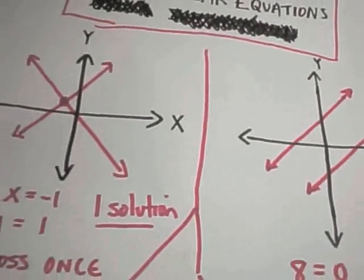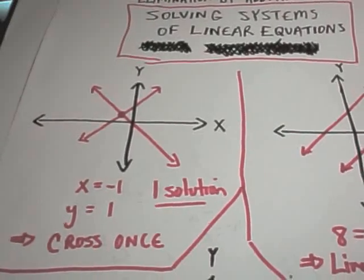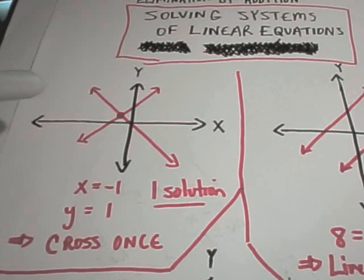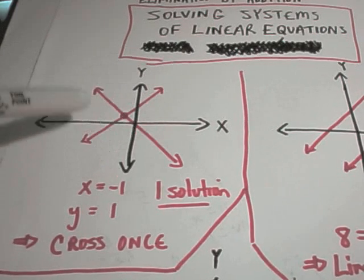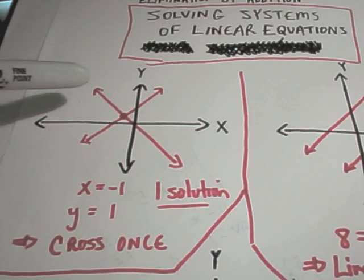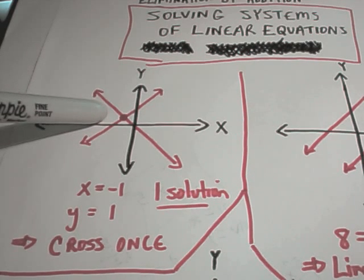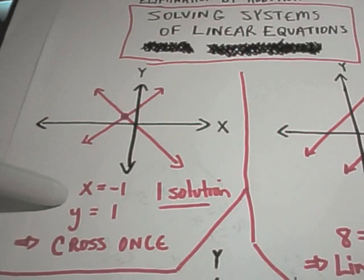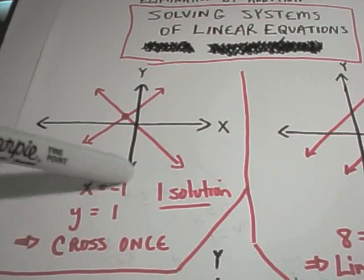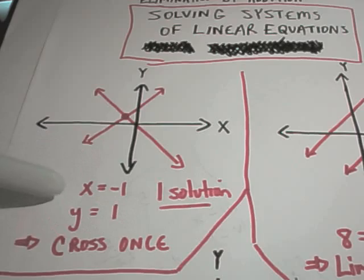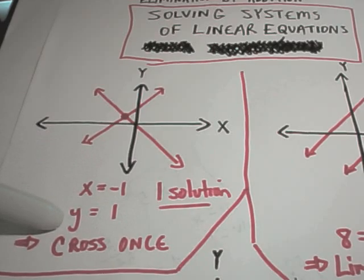And again, as I talked about in the last video, or the one that uses substitution, we're graphing. You could graph these linear systems of equations, and one of three things is going to happen. Either the lines are going to cross in one place, that means you have one solution, and eventually you'll be able to do some algebra to where you'll get x equals some number, y equals some number.